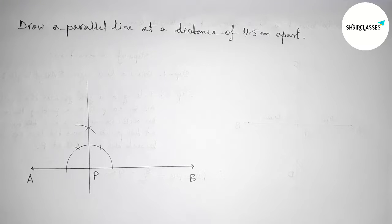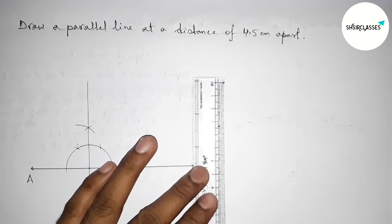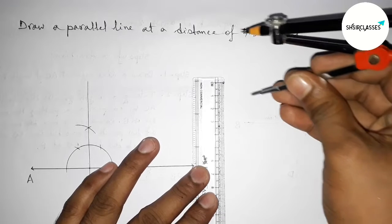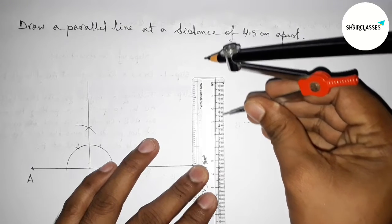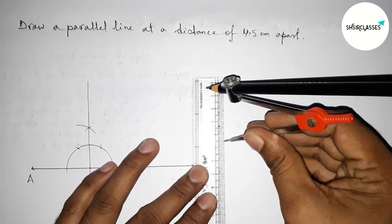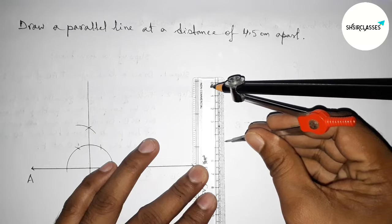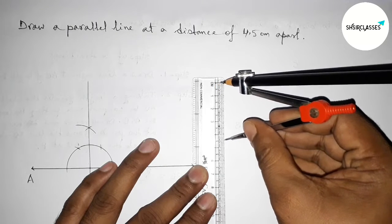Next we have to take 4.5 centimeter length with the help of a scale and compass. This is 1, 2, 3, 4, and this is 4.5 centimeter length.